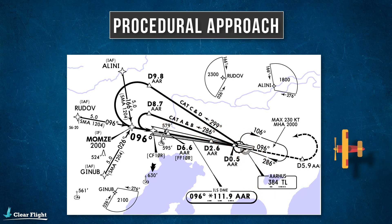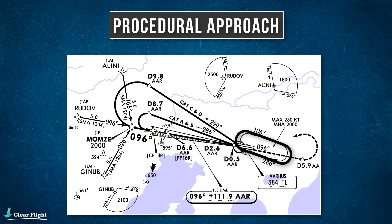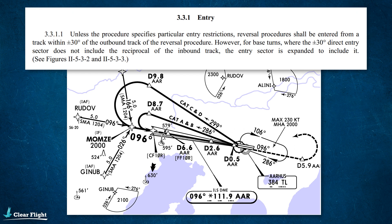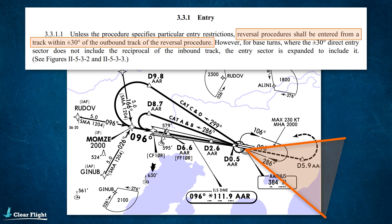There are two ways that you can start this procedural approach. You can either track to the beacon and proceed straight outbound, or you can enter the hold first and start the procedure from the hold later. Regardless of which way you start, ICAO PANS-OPS DOC 8168 tells us that you have to be within 30 degrees of the outbound track in order to start the procedural approach. So your track to the Tango Lima, whether you're in the hold or not, must be between 256 degrees and 316 degrees. If you're not within this 60 degree cone, you would have to enter the hold or fly a course reversal or racetrack procedure first, but we'll talk about those more in the next lesson.